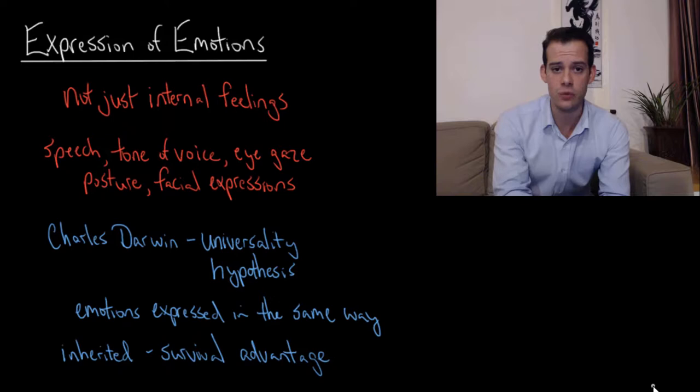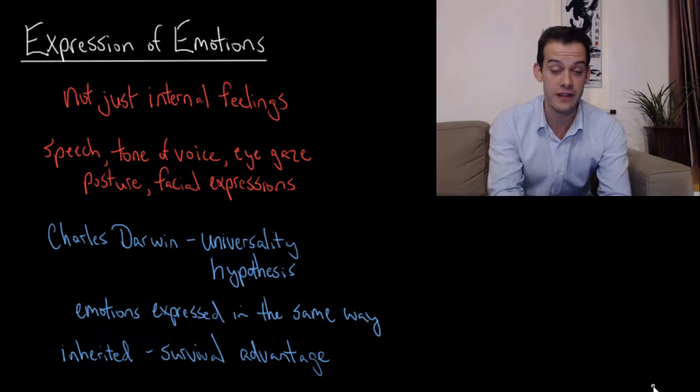So this brings us to the work of Charles Darwin who in 1872 wrote a book on this subject, the expression of the emotions in man and animals. And what Darwin proposed is known as the universality hypothesis.